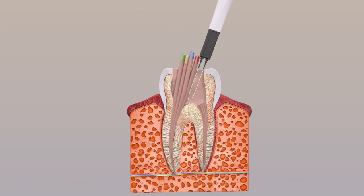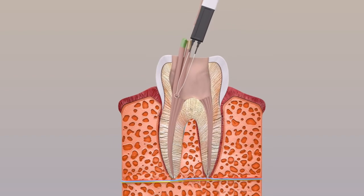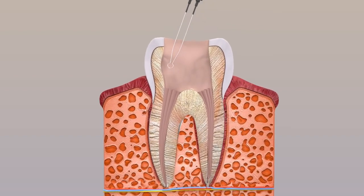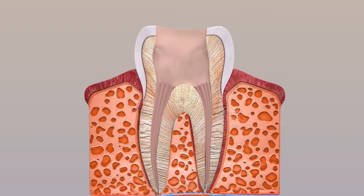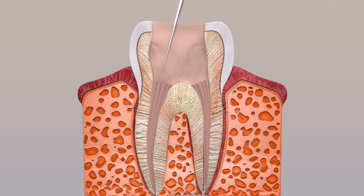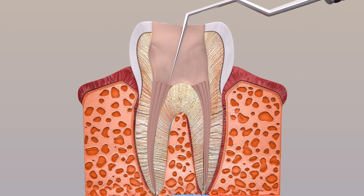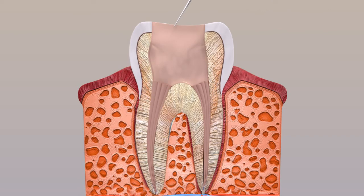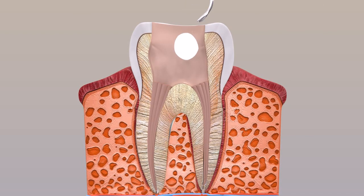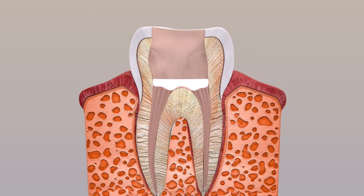Excess gutta-percha sticks are cut and removed by a gutta-percha cutter. The gutta-percha sticks are then finally positioned so that they are held tight in place. The remaining cavity is filled with permanent material.